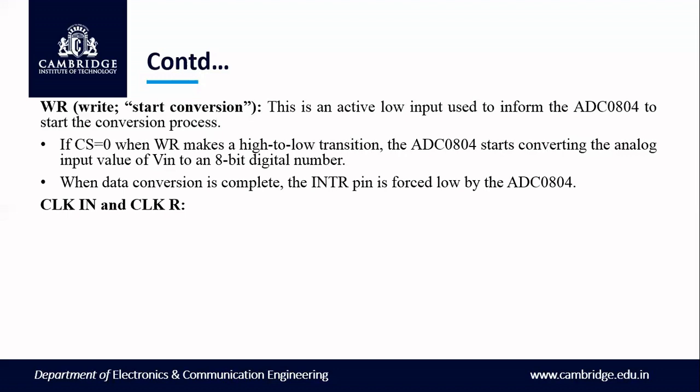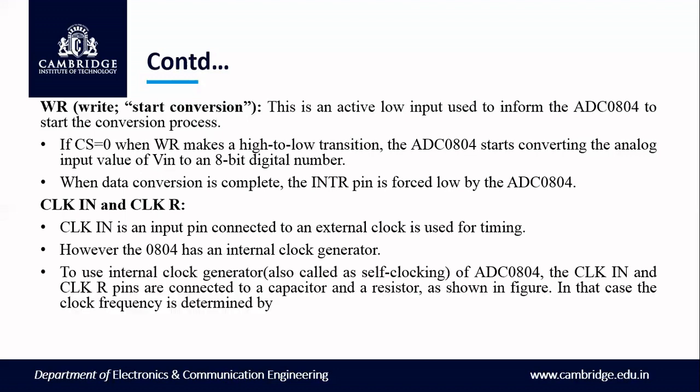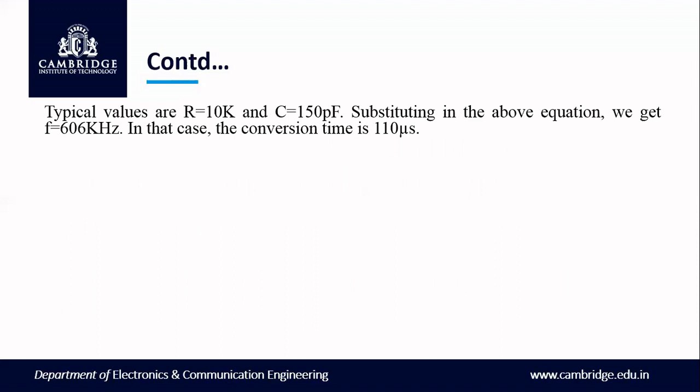Clock in and clock R play an important role in determining conversion time. Clock in is an input connected to an external clock used for timing. However, the ADC0804 has an internal clock generator. To use the internal clock generator, the clock in and clock R pins are connected to a capacitor and resistor. The clock frequency is determined by the formula F = 1 / (1.1 × RC). With typical values of R = 10 kΩ and C = 150 pF, substituting gives a frequency of 606 kHz, and the conversion time is 110 microseconds.